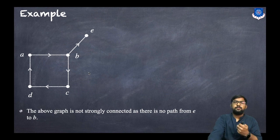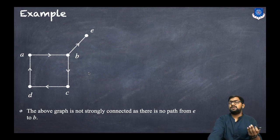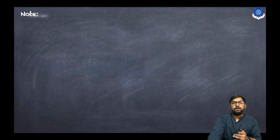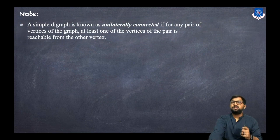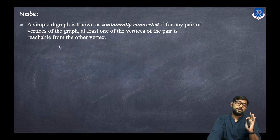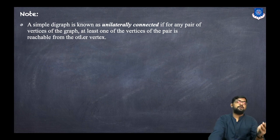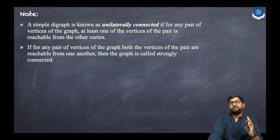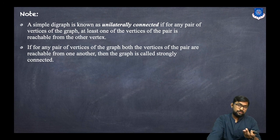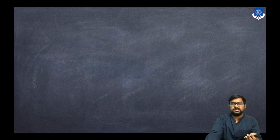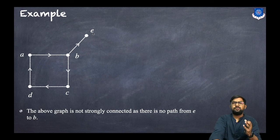Now is it a weakly connected graph? For a weakly connected graph, the condition is it must be a connected graph as well as not strongly connected. Now there is another definition: a simple digraph is known as unilaterally connected if for any pair of vertices, at least one of the vertices is reachable from the other. If both vertices are reachable from one another, it is strongly connected. This graph is unilaterally connected because we have b to e but not e to b, and it is connected — so it is unilaterally connected.